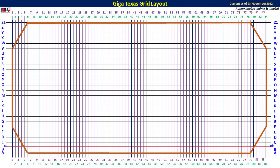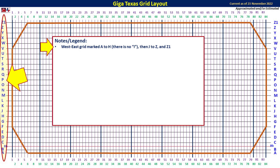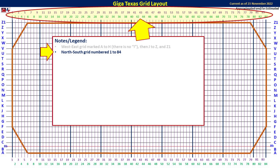GigaTexas is organized into a grid pattern. Depending on which part of the factory we're talking about, there are up to four floors, and each floor uses this same basic grid pattern. The grid is listed west to east, starting with A and going to Z, or sometimes Z1. There is no I, as it would probably be confusing. The Z or Z1 is a slight discontinuity based on where you are on the east side. There is also a north-south grid numbered 1 all the way through 84, replicated on all four floors.